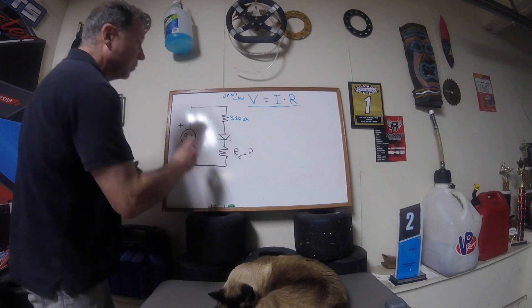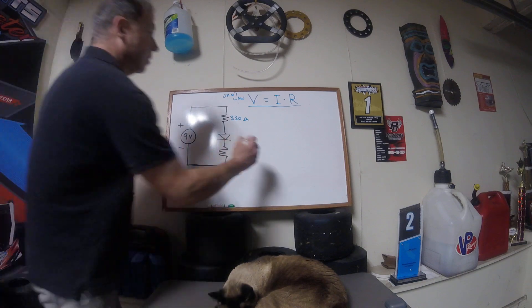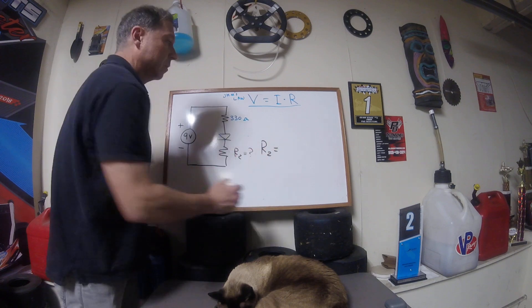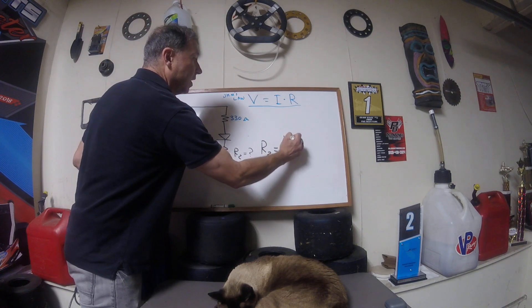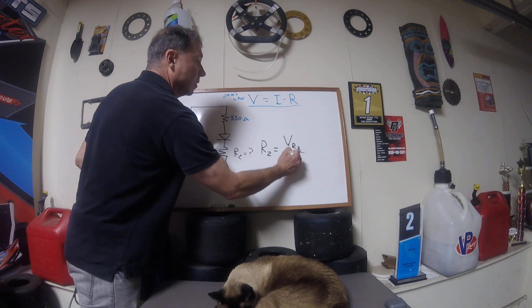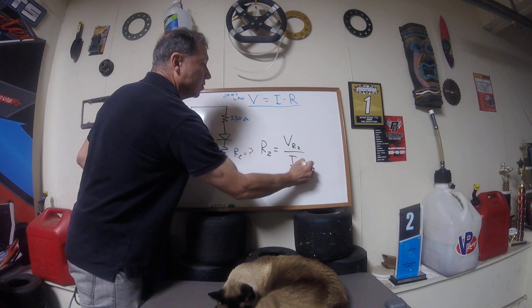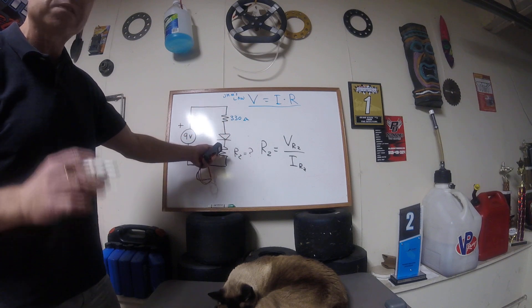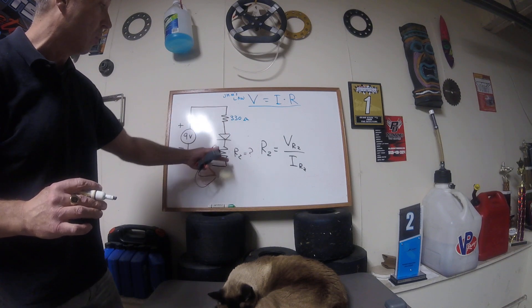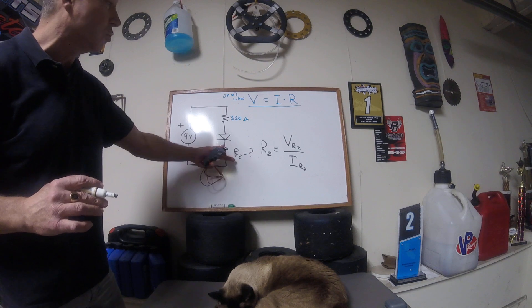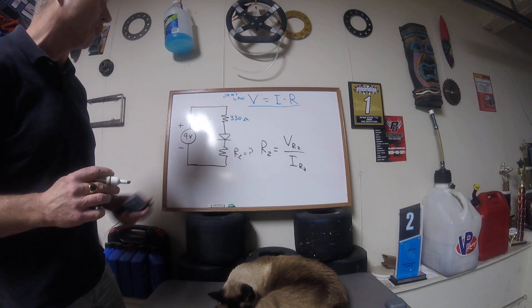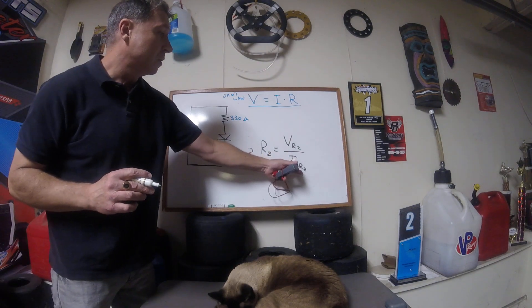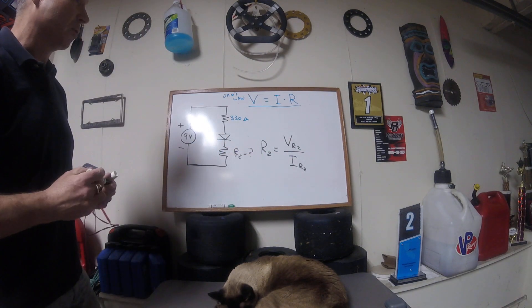So rearranging the formula, this formula, Ohm's Law, R2 is equal to V across R2 divided by IR2, which is I total. Remember, each component has the same value of current in a series circuit. So whatever current flows through R2 must be the same as what flowed through that we calculated through R1, which was I total of the circuit.